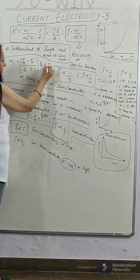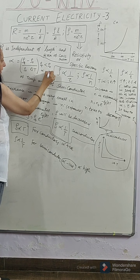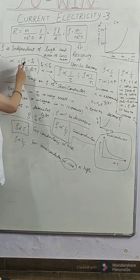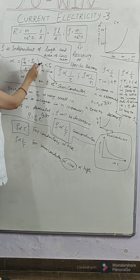If rho T is less than rho naught, then alpha will be negative, which is the situation for semiconductor. In conductor's case, final resistivity will be more. So, alpha will become positive.